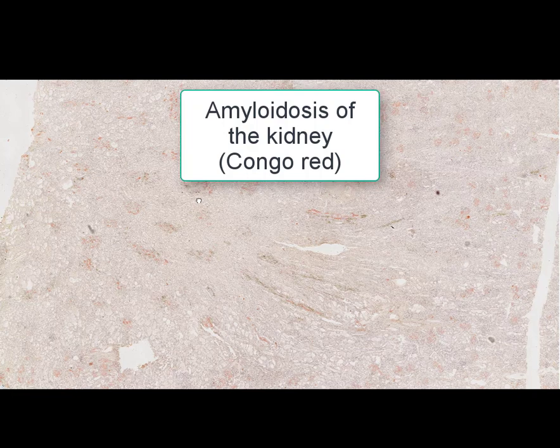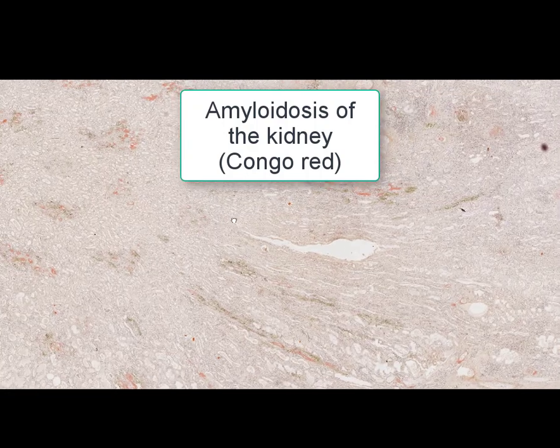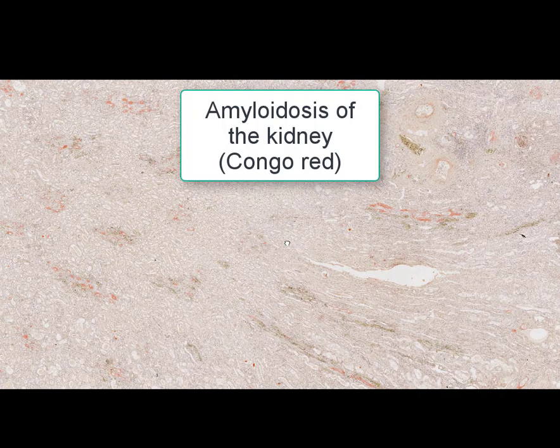On this slide we can see a histological section of the kidney. The name of the slide is amyloidosis of the kidney. Amyloidosis is a protein, stromal-vascular or extracellular degeneration characterized by the pathological accumulation of the fibrillar protein known as amyloid. This pathological protein, amyloid, is accumulated in the stromal-vascular components of different organs, including the kidney. The main mechanism for this degeneration is perverted synthesis, because amyloid is a pathological protein.